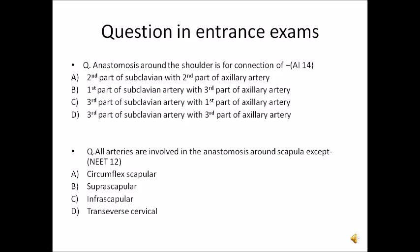Now, some questions are asked in entrance exams about the anastomosis around the scapula. The first question was asked in All India 2014: 'Anastomosis around the shoulder is a connection of...' As shown in the flowchart, the anastomosis is from the subclavian and axillary arteries. From the first part of the subclavian, the thyrocervical trunk gives the suprascapular and transverse cervical arteries. From the third part of the axillary artery arises the subscapular artery. The answer is P — first part of subclavian artery and third part of axillary artery.